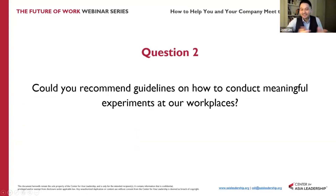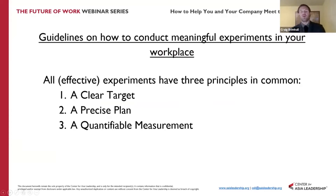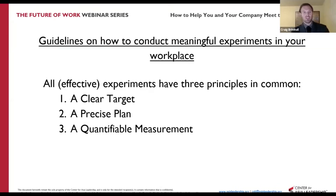Craig, please go ahead and recommend some guidelines on how we can do experimentation in our workplace. All effective experiments have three principles in common: the first is a clear target, the second is a precise plan, and the third is a quantifiable measurement. These are important because they set the parameters of the experiment, so we need to start out with a clear target of what we're trying to achieve.